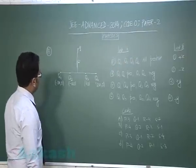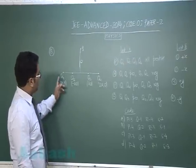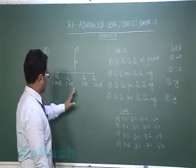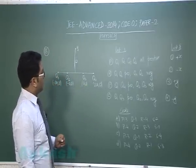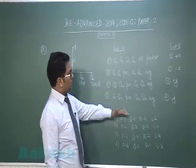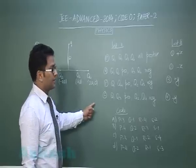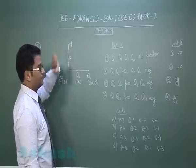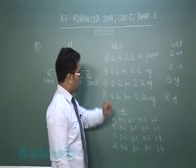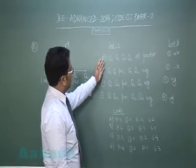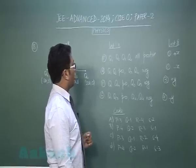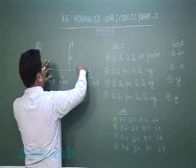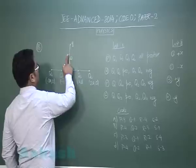Question number 18 is from electrostatics. Q1, Q2, Q3, Q4 are all charges of the same magnitude kept at respective locations. List 1 gives the nature of the charges and list 2 gives the direction of force on a charge placed here. First, for option P, all are positive. In that case, the field due to all would be in the upward direction and the force on this would be in the upward direction, that's positive y.